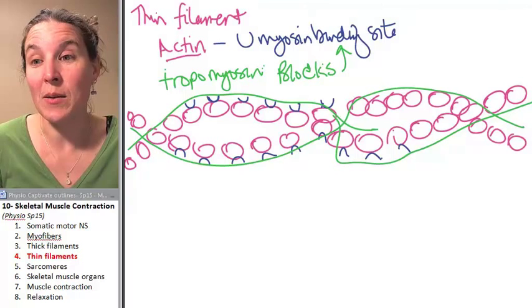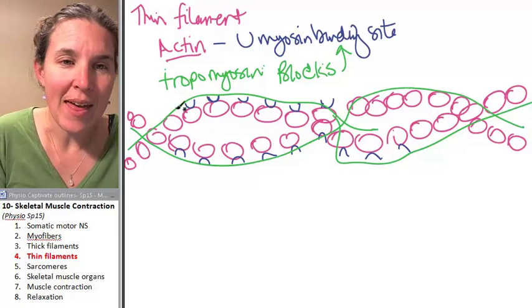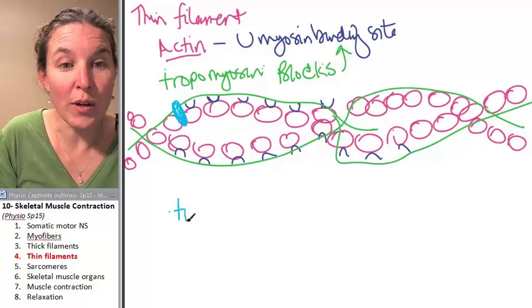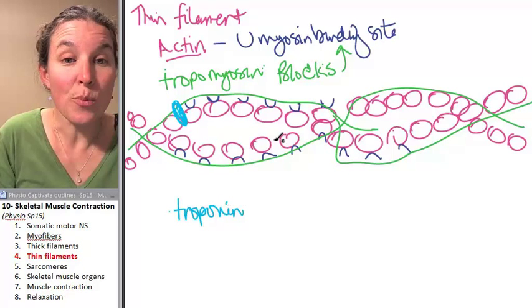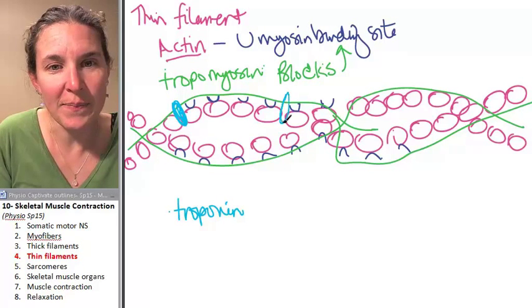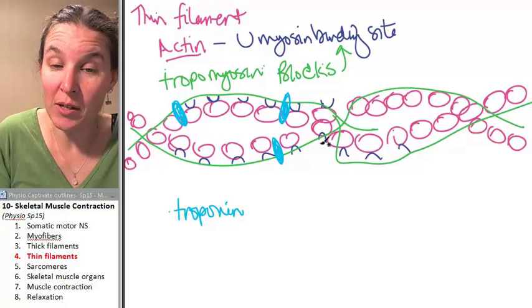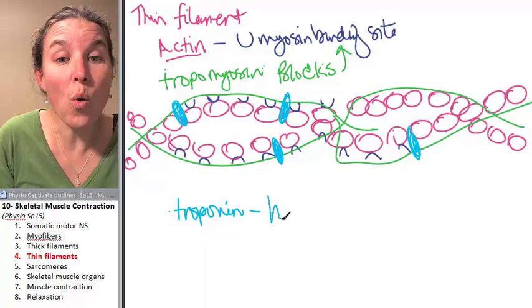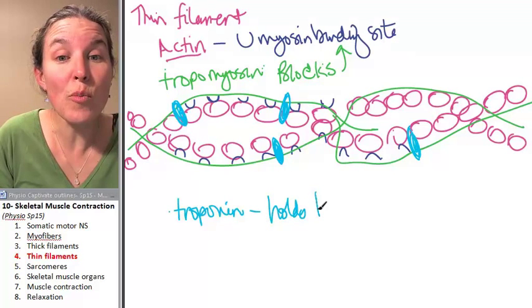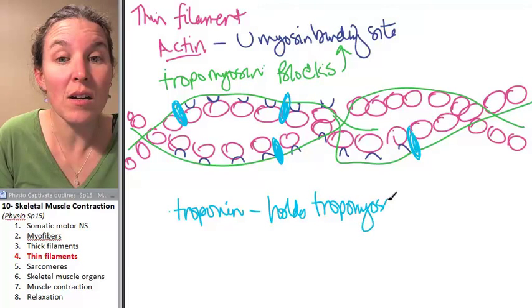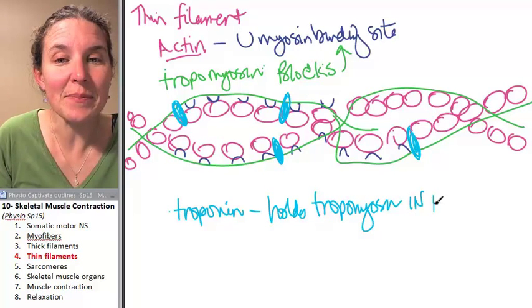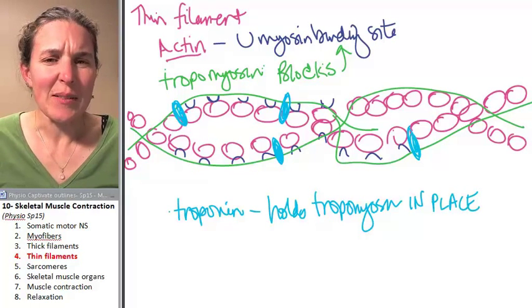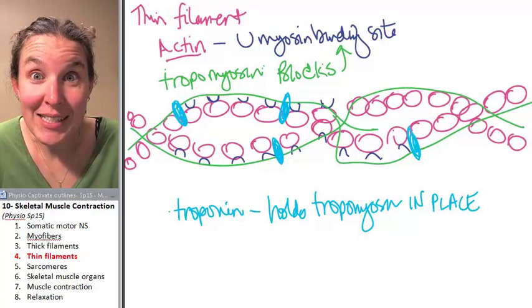And guess what? We have to bring in somebody else. We have to bring in a gatekeeper. And that would be this guy. And this guy is called troponin. And troponin, just another protein. And troponin's job, this is very cool, troponin holds tropomyosin in place. Right? What's in place? Blocking the myosin binding sites.